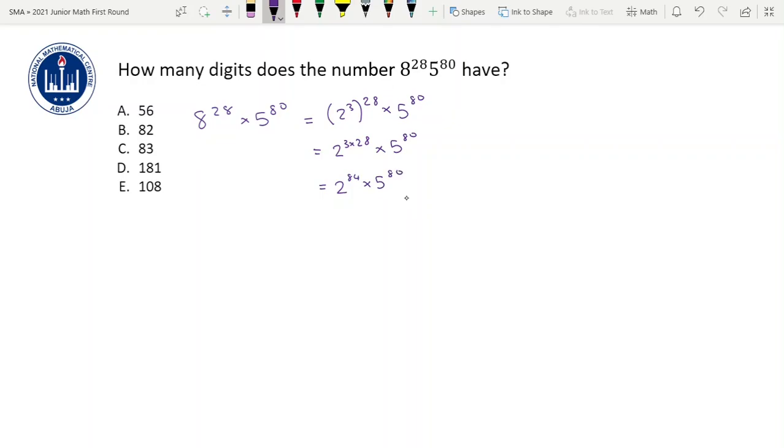Then we're going to split this 2 raised to power 84 into two parts. We'll have the first part that will be 2 raised to power 4 and we'll have 2 raised to power 80. The reason why we're separating it is because we have 5 raised to power 80 and we want some numbers to multiply together to give us 10, right? So let's continue with that.